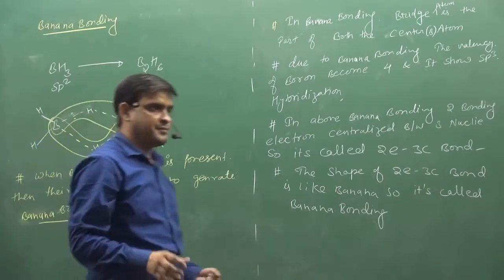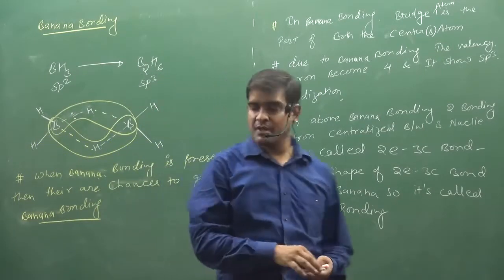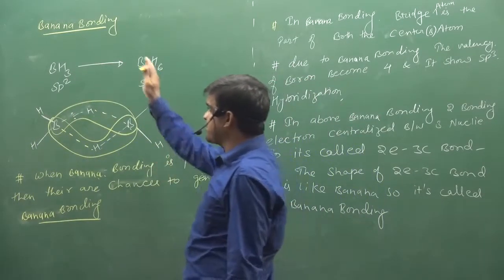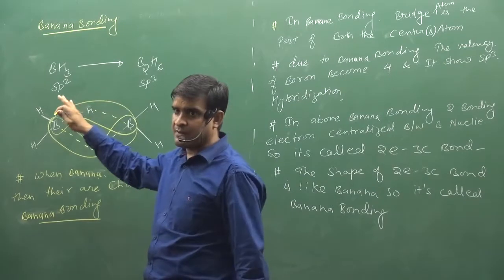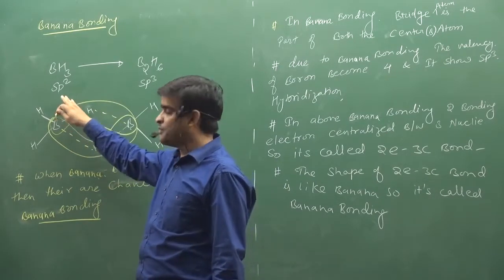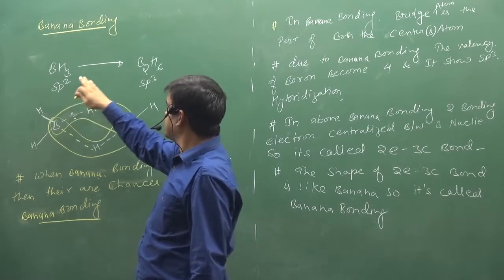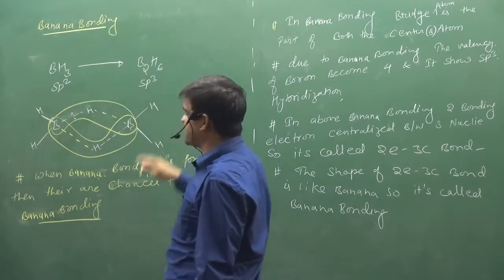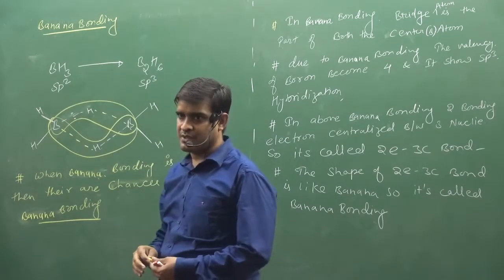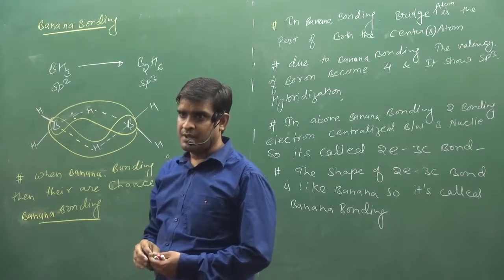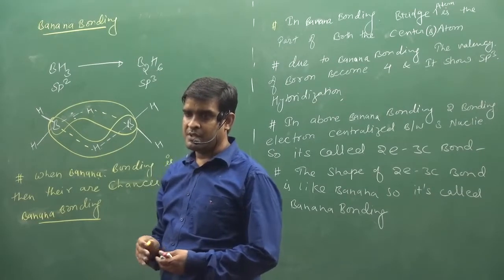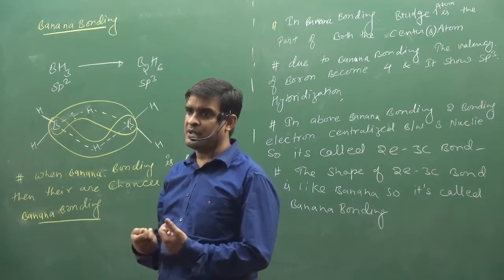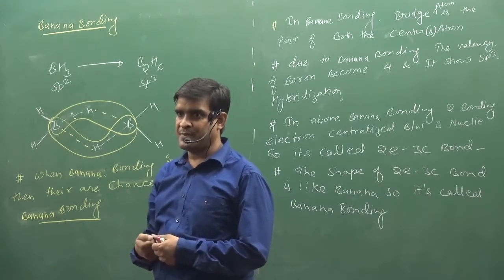We are going to study banana bonding. First of all, I got banana bonding - where was it? BH3. I saw BH3 is in dimer form, B2H6. And when it was in dimer form, the boiling point and melting point also increased.